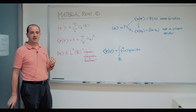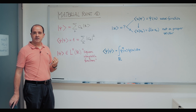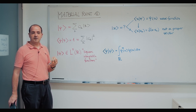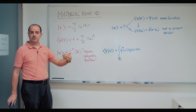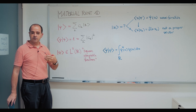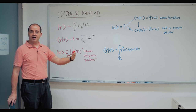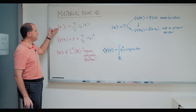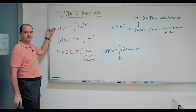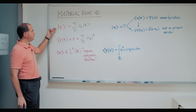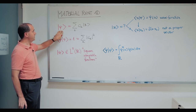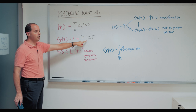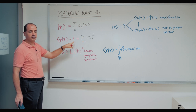How do we describe a system whose variables are something like position, where there's a continuous number of values instead of a discrete one? Well, for discrete systems, we had this description — the state was written like this, and these coefficients had to be normalized to one.